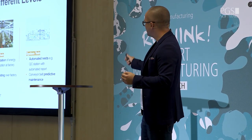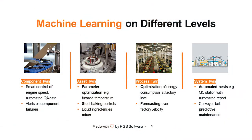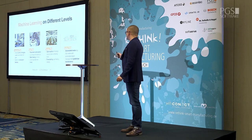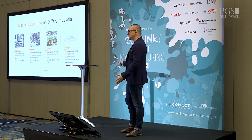Going to the full process level, there is a process twin — where you put optimizations at the level of the full production line. If you want to optimize the ecological footprint, the amount of energy being used, or the amount of ingredients to limit waste, this is the process level twin. Last but not least is the system twin. This is the most important one for the factory mesh concept, because there you have the full set of process twins, asset twins, and component twins all connected together, and you can do the automation of your entire company.